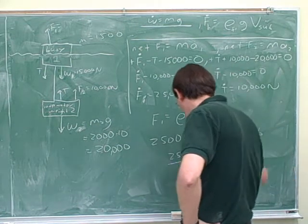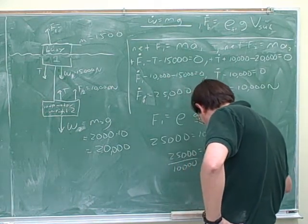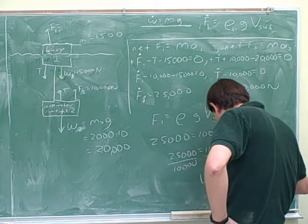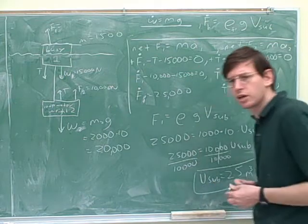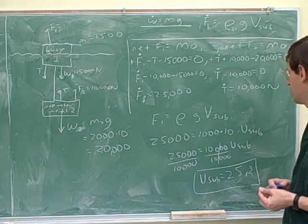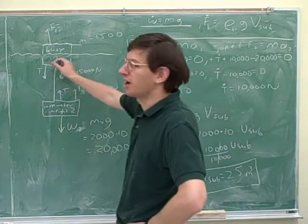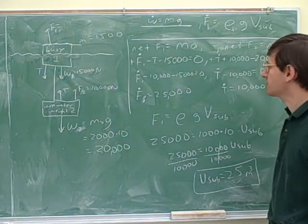So 2.5 meters cubed. It's good to know what the units are. The question was, what is the submerged volume of the buoy? So this is the submerged portion for object 1. I could have said V sub for object 1 down here.